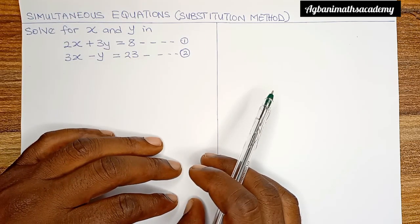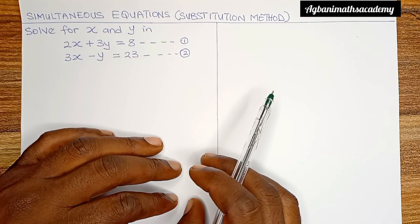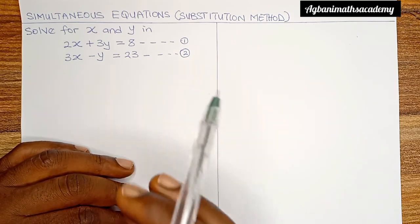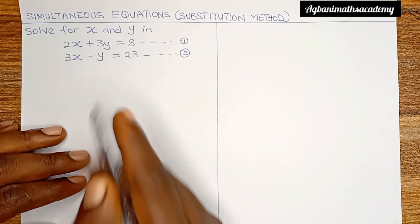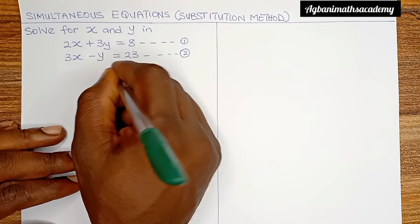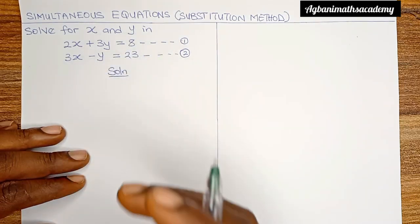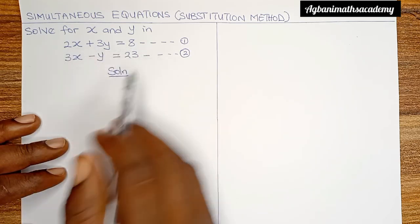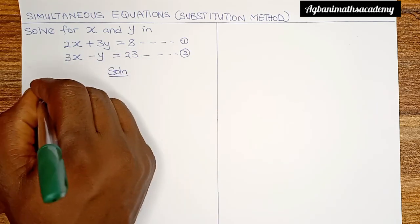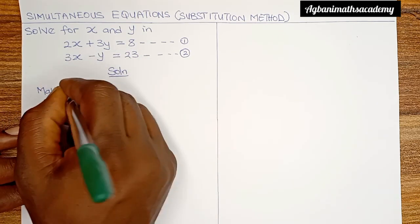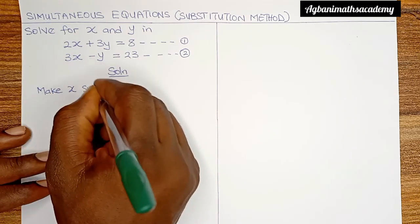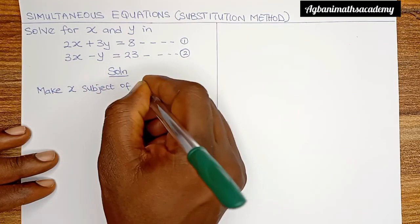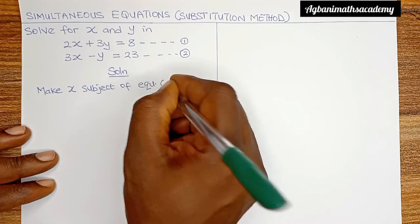Anyone you choose will give you the same answer at the end of the day. So let's make x the subject of the formula in equation 1. That's how we start. We are using substitution method, so we are going to make x the subject of the formula in equation 1.